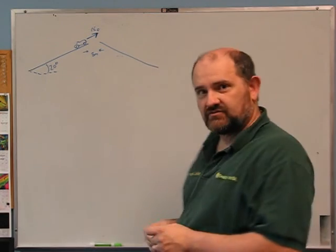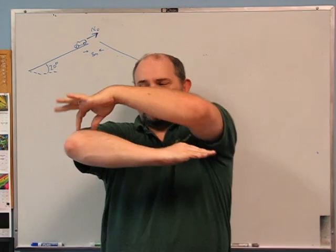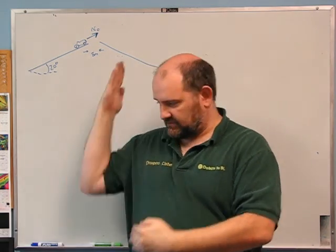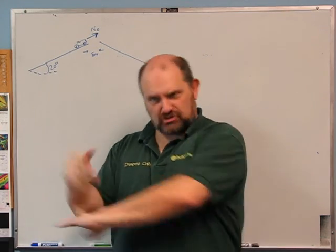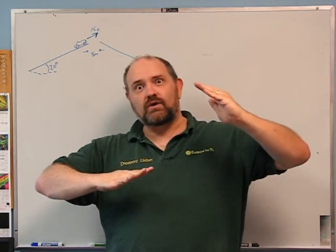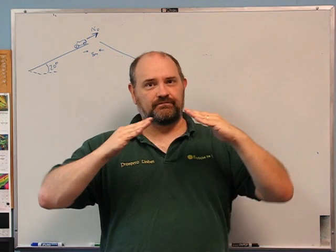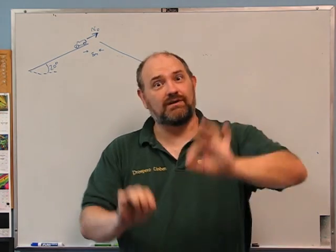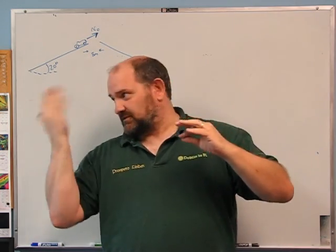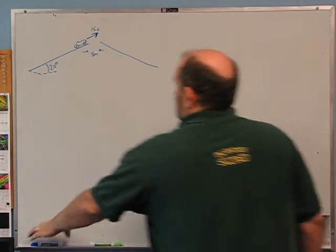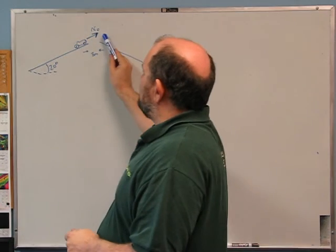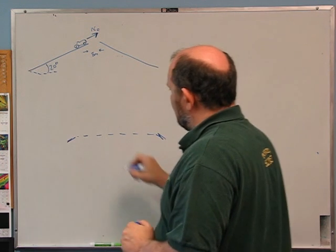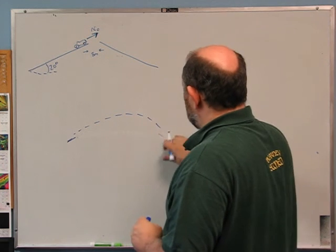Last problem: unsafe driving on a drawbridge. The bridge starts to raise, and instead of stopping you gun it. Your car launches at an angle of 20° and needs to clear 8 meters horizontally. We model the car as a point. You want to land on the other side at the same height you left — a projectile motion problem.